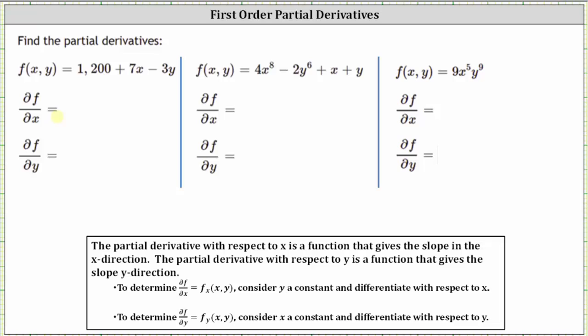The derivative of 7x with respect to x is seven. Then we have minus the derivative of 3y with respect to x. Because we are treating y as a constant, 3y is a constant, and therefore the derivative with respect to x is zero. The partial of f with respect to x is equal to seven.